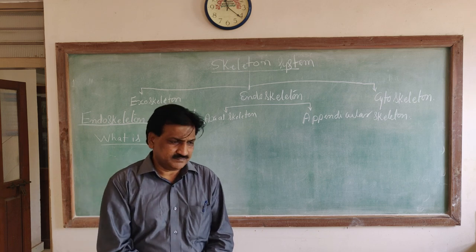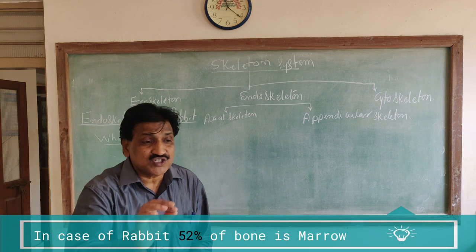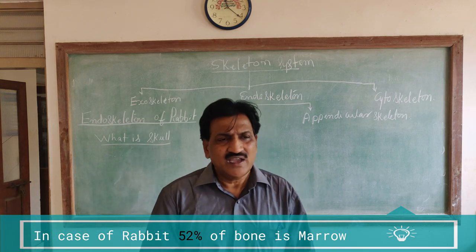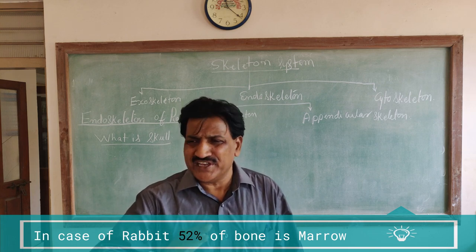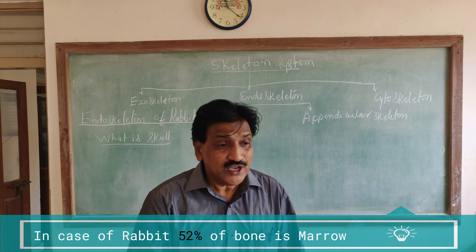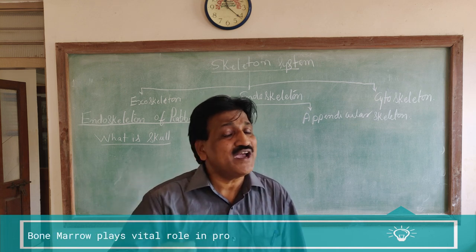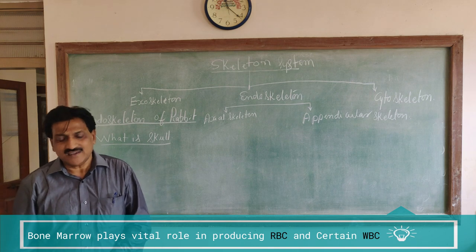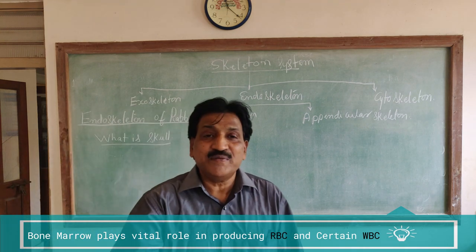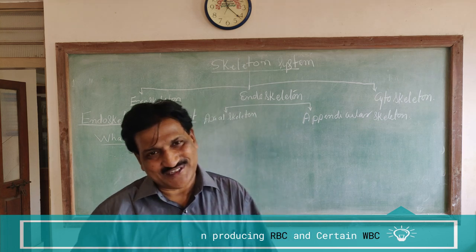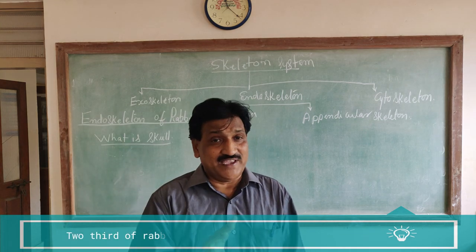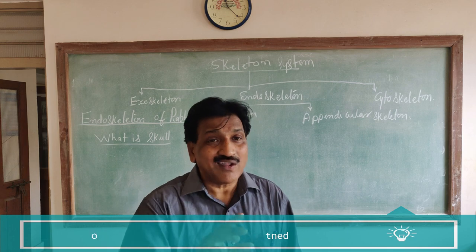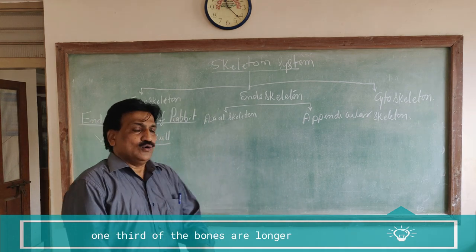In case of the rabbit, 52% of the bones have marrow. The bone has a cavity called the marrow cavity, which is vascular and spongy in nature, having fatty material. That marrow is very important for the manufacturing of RBC and certain WBC. Two-thirds of the rabbit bones are flattened and one-third are longer.